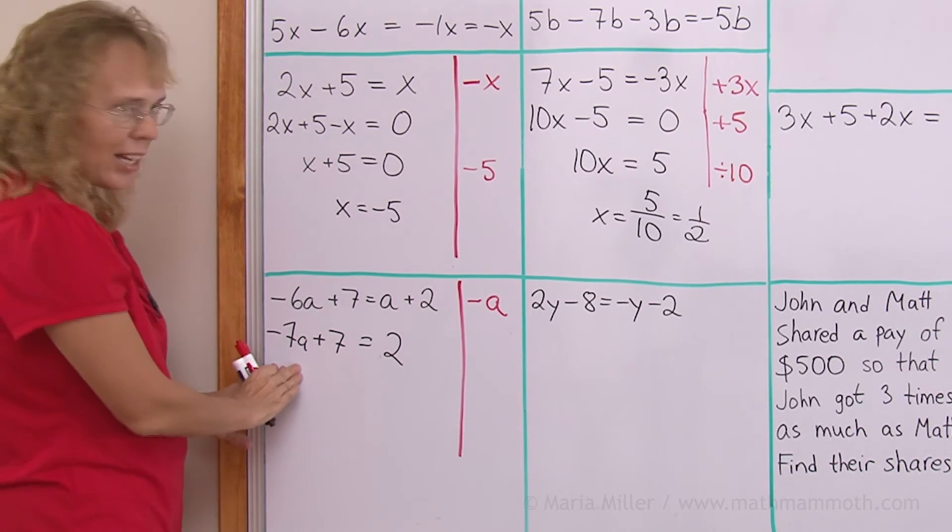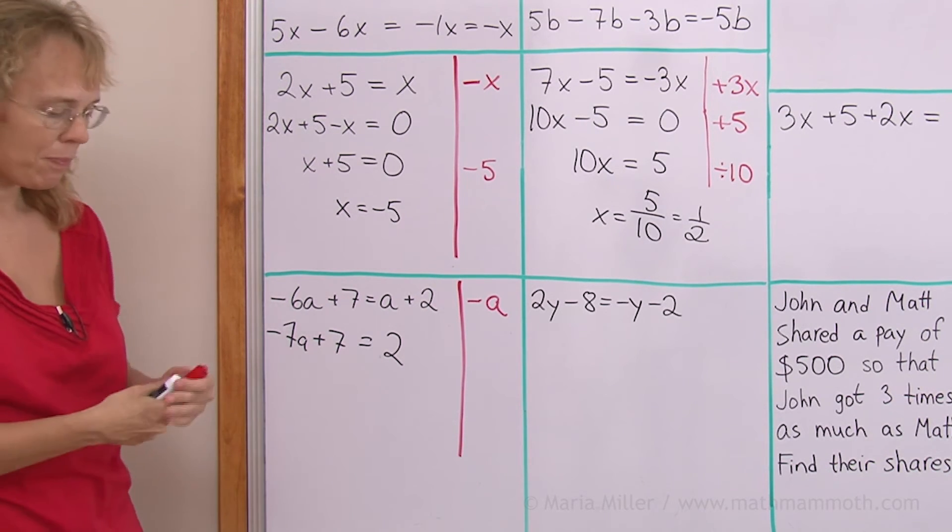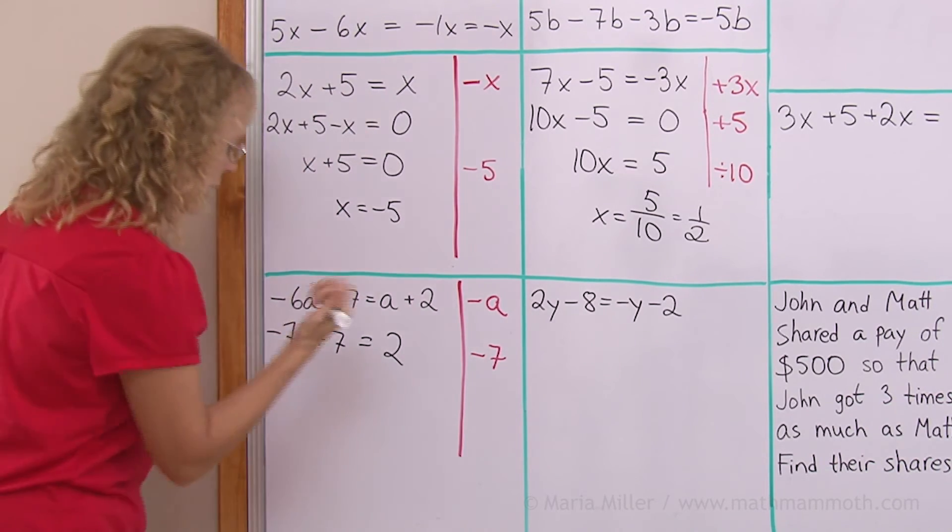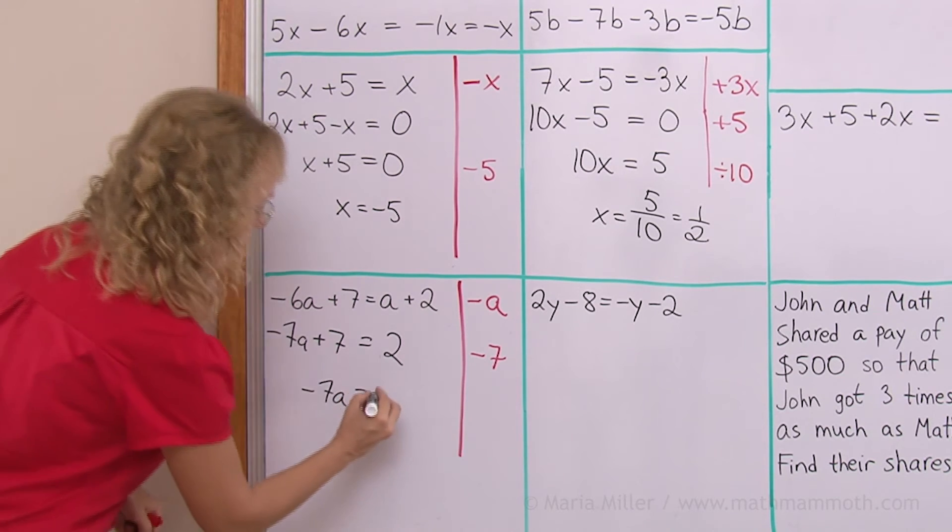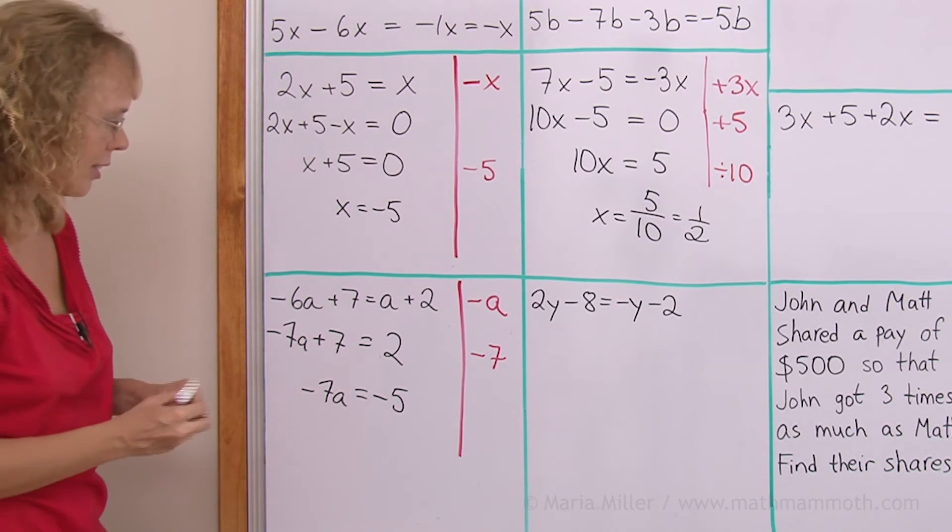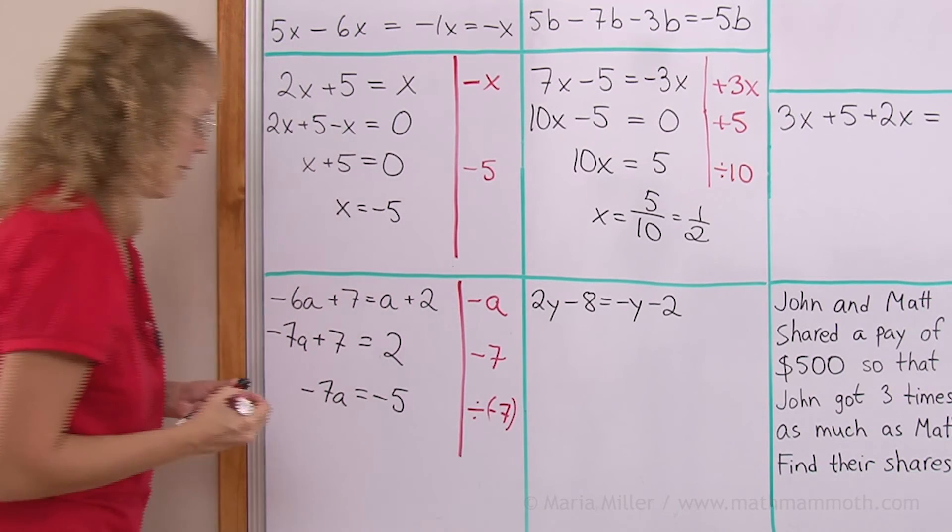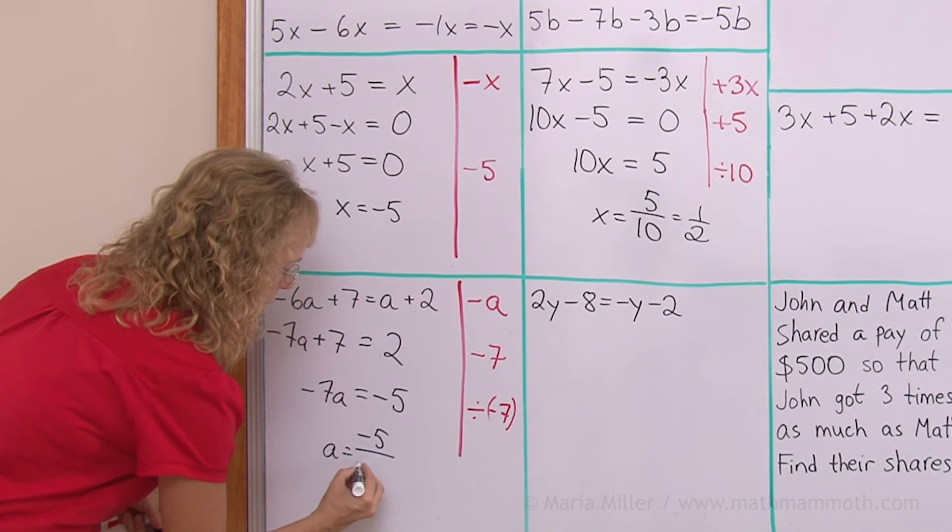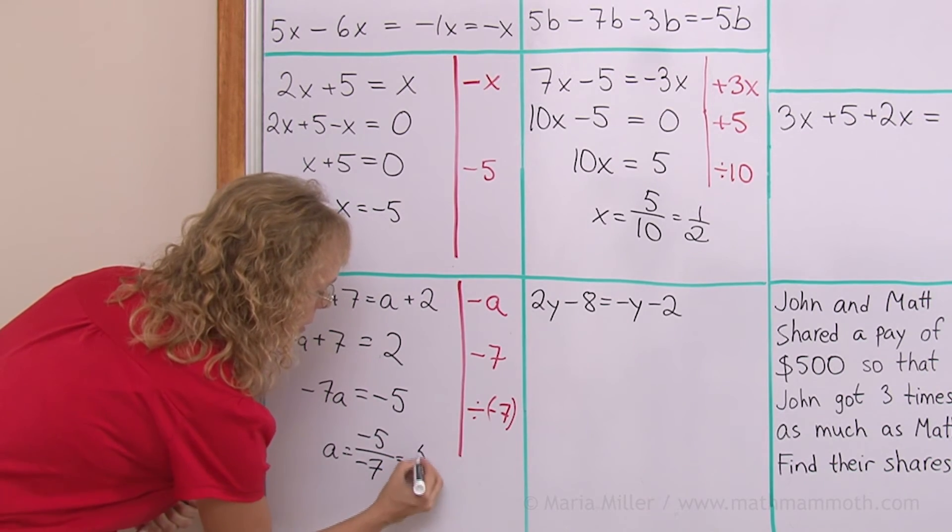And now, I want a or the term with a. This negative 7a alone here on this side. So, I need to get rid of this plus 7. And of course, for that, I would subtract 7 from both sides. So, that leaves now negative 7a. On this side, 2 minus 7, negative 5. And now, we need to divide by negative 7. And then that leaves a alone. Over here, we have negative 5 divided by negative 7. And it's a division of negative by negative. So, the answer is positive. Positive 5 over 7.